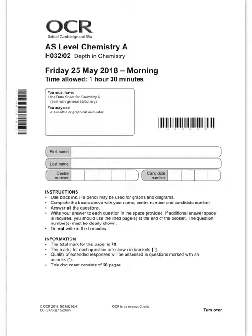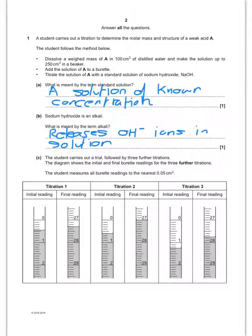So today we'll go through the 2018 depth in chemistry paper. The first question is titration and starts off with some information.